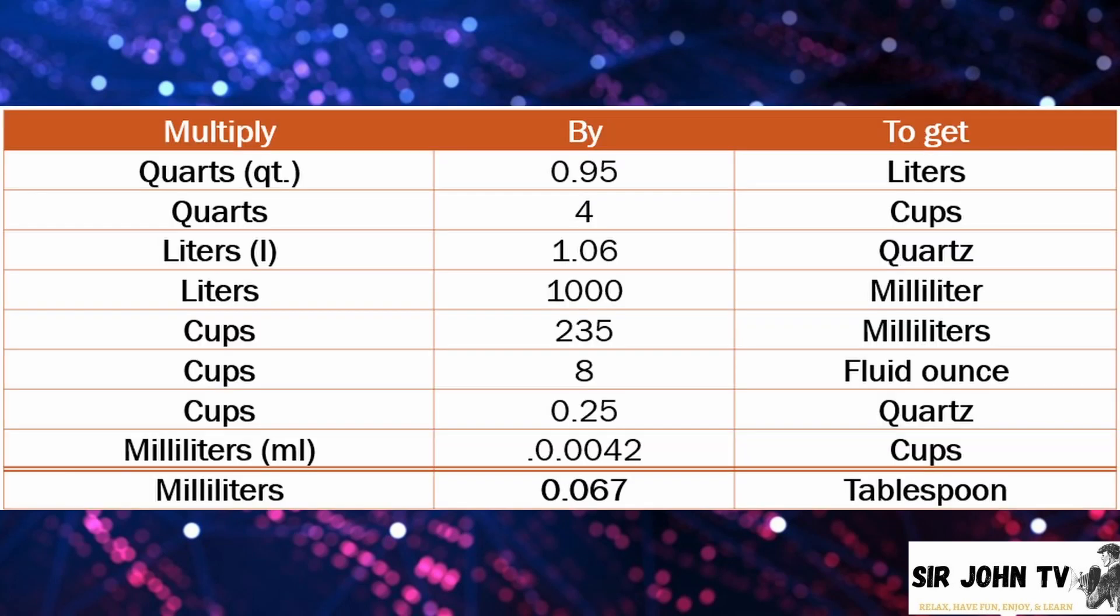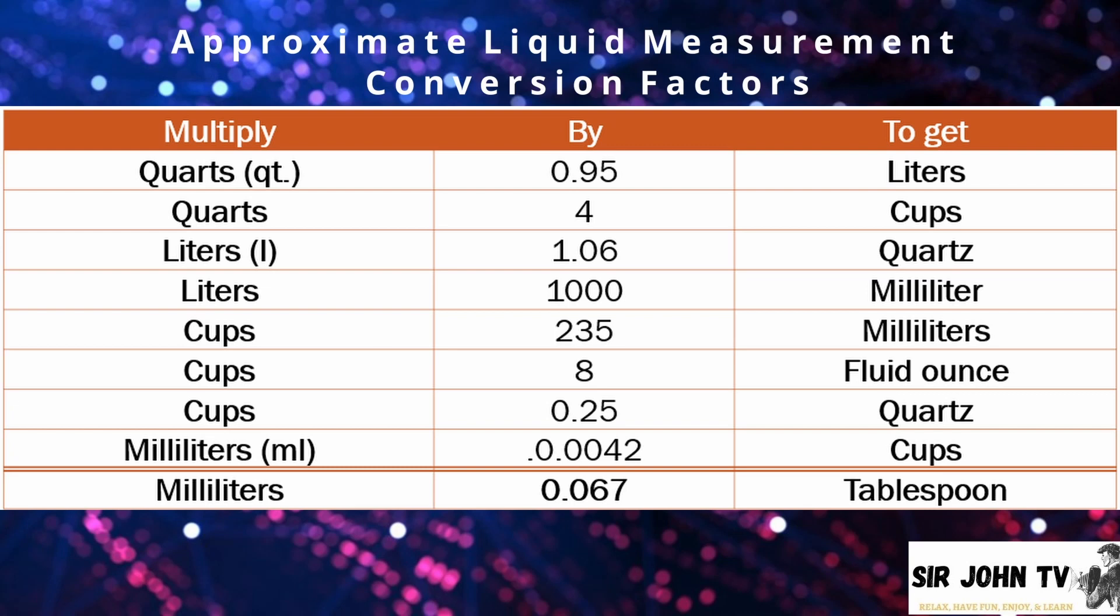And we have here the approximate liquid measurement conversion factors. It uses the multiplier to get the required unit of measurement. Say for example, we are looking for the equivalent of 4 quarts to cups. We will just simply multiply 4 quarts by our multiplier, which is 4, to get the equivalent of cups. Therefore, 4 quarts, if multiplied by 4, is equal to 16 cups. That's how we are going to use this approximate liquid measurement conversion factors. We will know more about that as we go on with our examples.